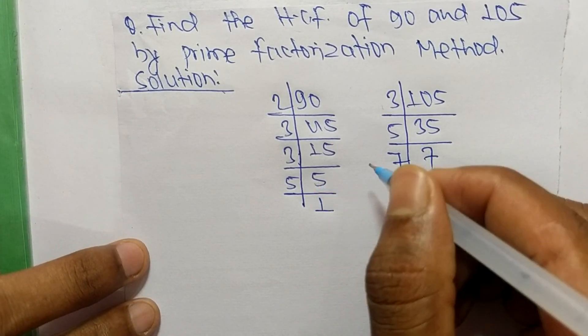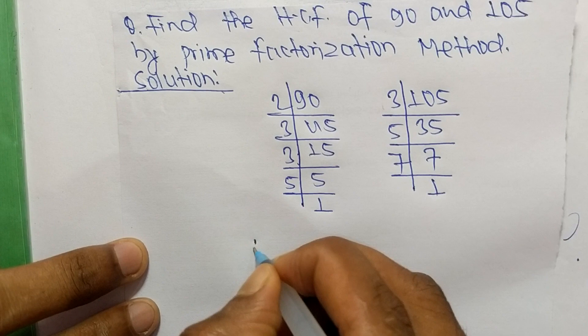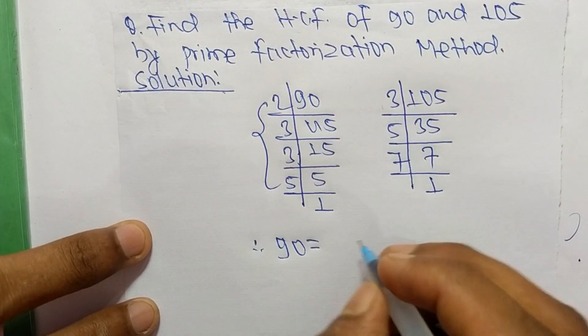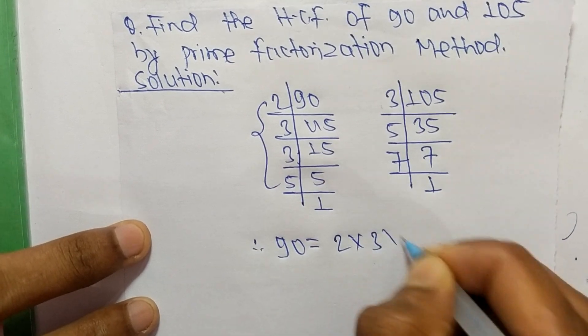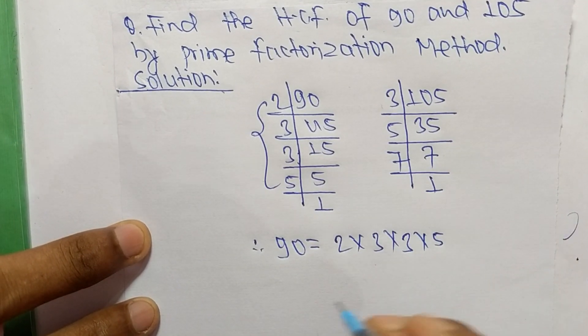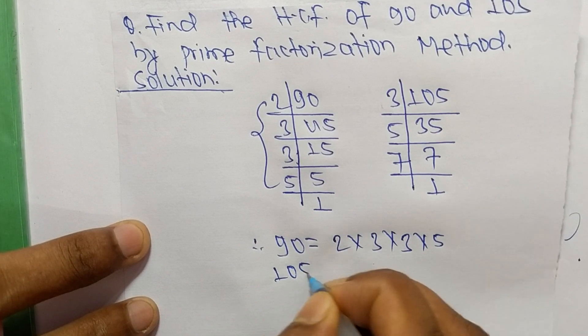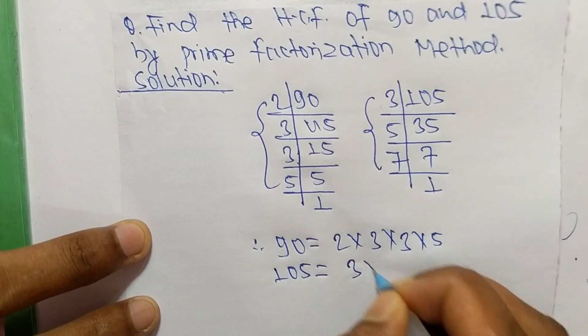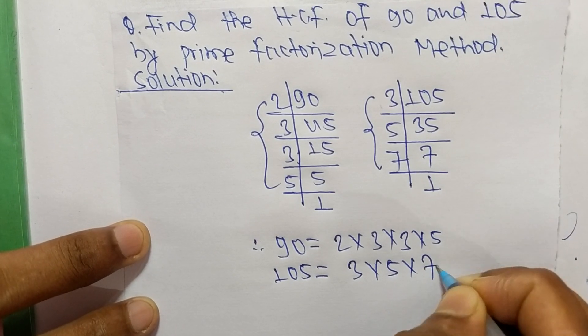So from these prime factors we can write 90 is equal to, from this part, it is 2 times 3 times 3 times 5, and 105 is equal to, from this part, it is 3 times 5 times 7.